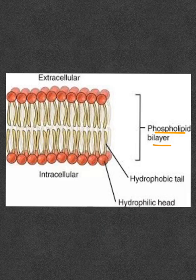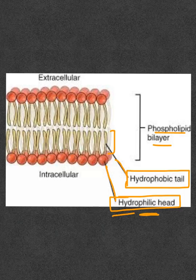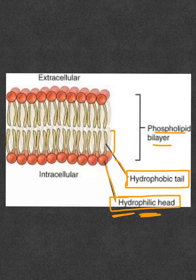The phospholipid bilayer has a hydrophilic head made of the phosphate group and a hydrophobic tail made of the lipid molecule. The hydrophilic head, as the name implies — hydro meaning water, philic meaning loving — so the phosphate groups face the water end of the cell membrane, towards the intracellular fluid and the extracellular fluid.